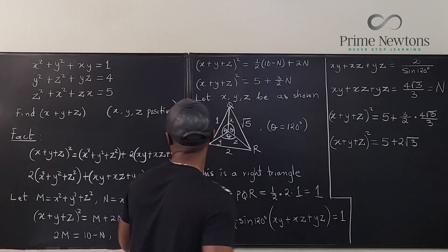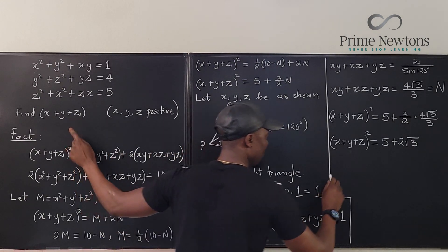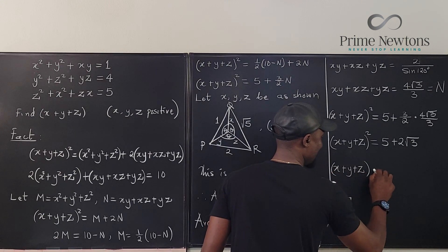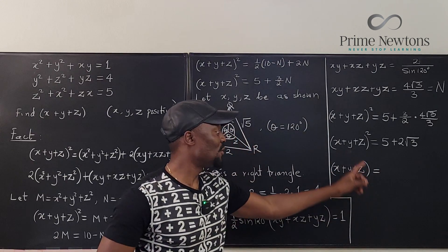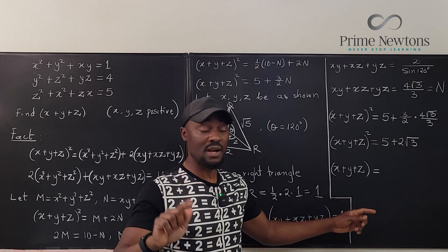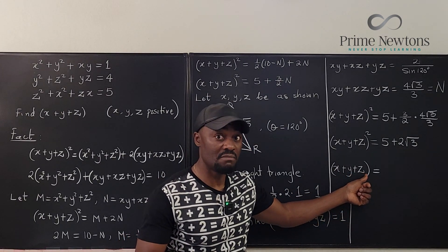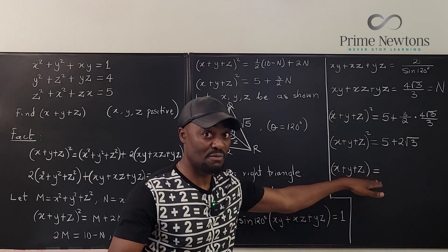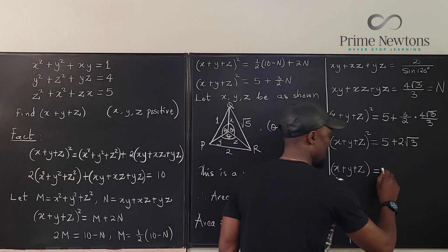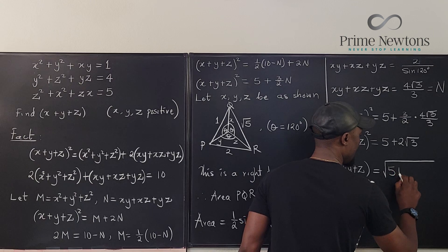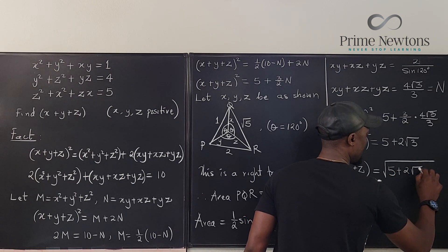So to get our final answer, which is what we're supposed to get, we have X plus Y plus Z is equal to... Here we're not going to do plus or minus, because we know that X, Y, and Z are each positive, their sum must be positive, so there's no minus option on the right hand side. So we're just going to say it is the square root of 5 plus 2 root 3.